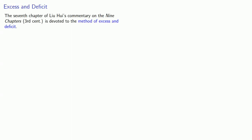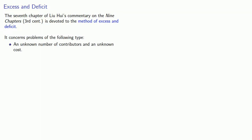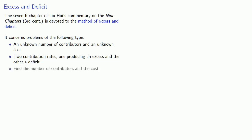The seventh chapter of Leroy's commentary on the Nine Chapters is devoted to the method of excess and deficit. It concerns problems of the following type: an unknown number of contributors and an unknown cost, two contribution rates — one producing an excess and the other a deficit — and the problem is to find the number of contributors and the total cost.